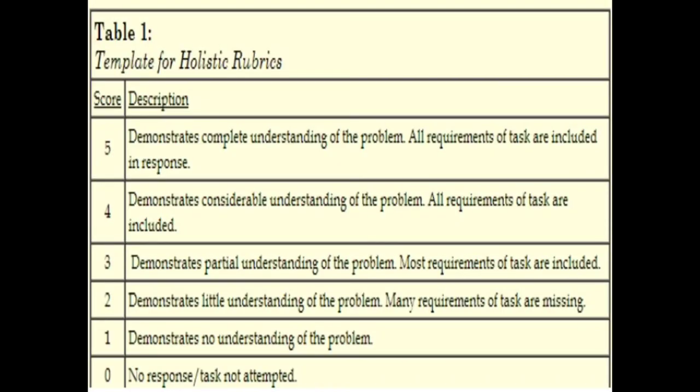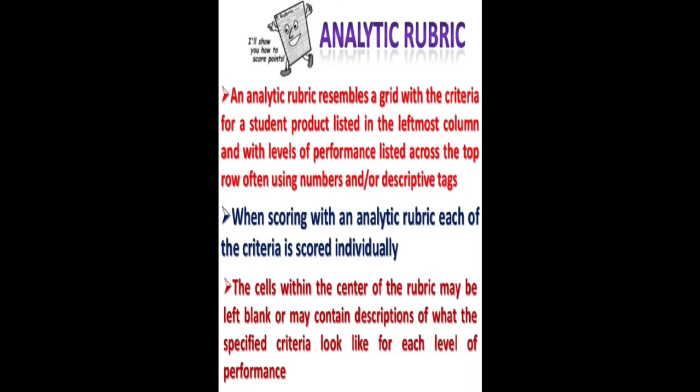This is an example of a holistic rubric. As we can see, scores from 0 up to 5 have different corresponding descriptions. This will be the basis for grading a product-oriented assessment.